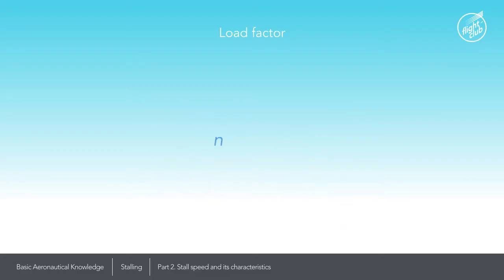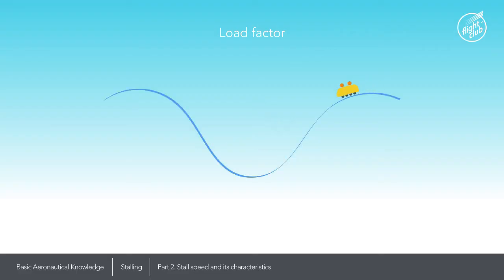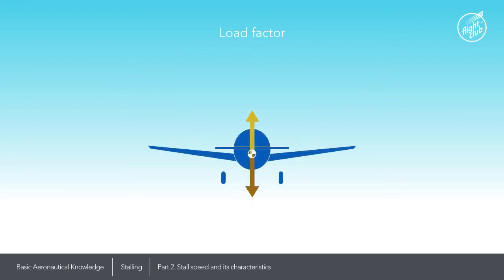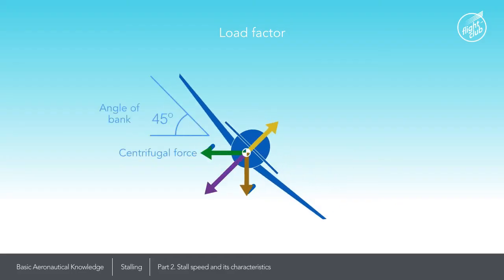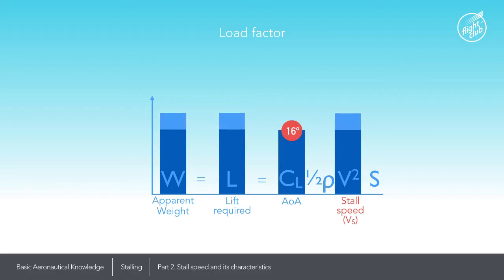Load factor. In aeronautics, the load factor is defined as the ratio of lift to weight. You may have perceived a positive load factor as the extra weight you feel at the bottom of a slope in a fast moving roller coaster. Similarly, an aeroplane will experience an increase in its apparent weight whilst in a turn or pulling out of a dive. For example, in straight and level flight the load factor is equal to 1, but in a 45 degree balanced turn, the load factor is 1.4. In such a turn, the aircraft's apparent weight increases, its need for lift increases, thus the stall speed increases.